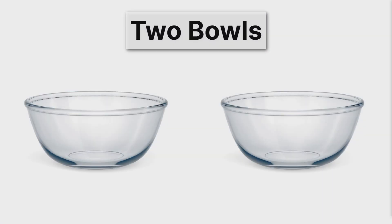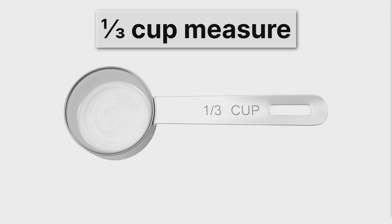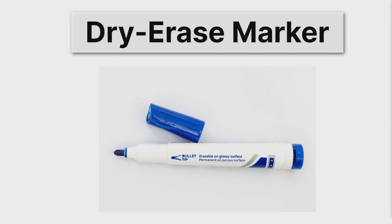You'll need two bowls. These are going to be filled with water that represents reactants and products. We're going to simulate a reaction by taking a one-half cup measure or a one-third cup measure and scooping back and forth. Each time, after we scoop water back and forth, we'll measure the height of the water in centimeters, so you need a ruler that has centimeters on it.